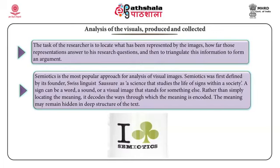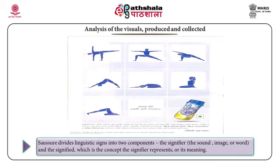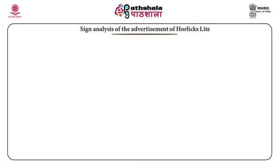Semiotics was first defined by its founder, Swiss linguist Saussure, as: 'A science that studies the life of signs within a society.' A sign can be a word, a sound, or a visual image that stands for something else. Rather than simply locating meaning, it decodes the ways through which meaning is encoded. The meaning may remain hidden in the deep structure of the text. Saussure divides linguistic signs into two components: the signifier — that is, the sound, image, or word — and the signified, which is the concept the signifier represents, or its meaning.